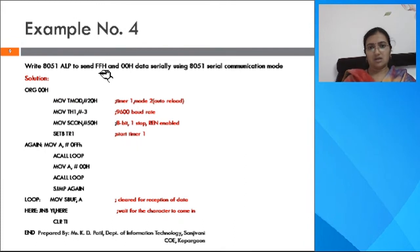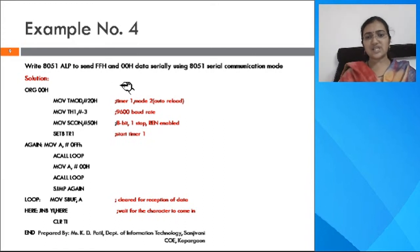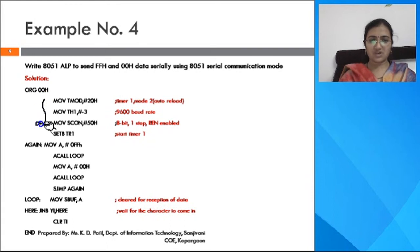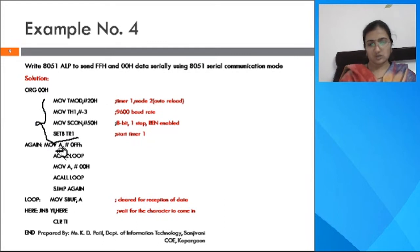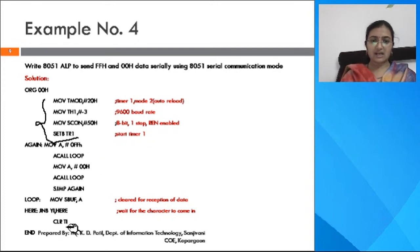Example 4 is similar to example 3, but here both FFH and 00H are sent through the TXD line. Transfer FFH to accumulator A, from A move it to SBUF, then monitor the TI flag. When TI gets raised, it indicates FFH has been sent successfully. Then clear the TI flag because we want to send another byte, 00H.